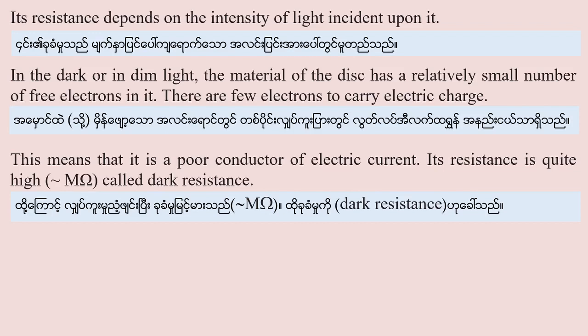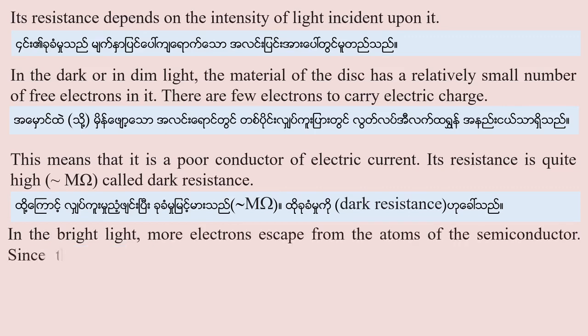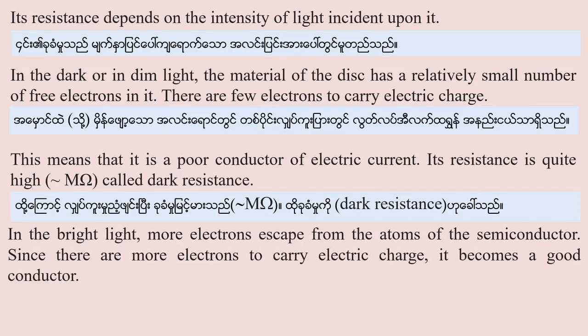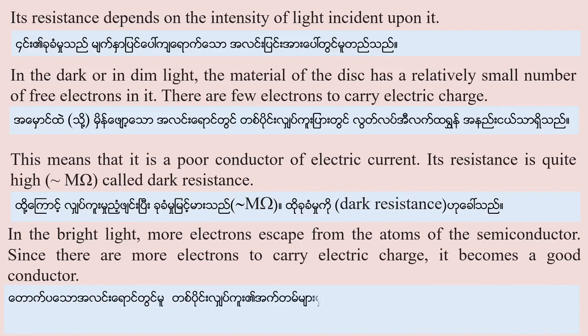In bright light, more electrons escape from the atoms of the semiconductor. Since there are more electrons to carry electric charge, it becomes a good conductor and its resistance decreases significantly.